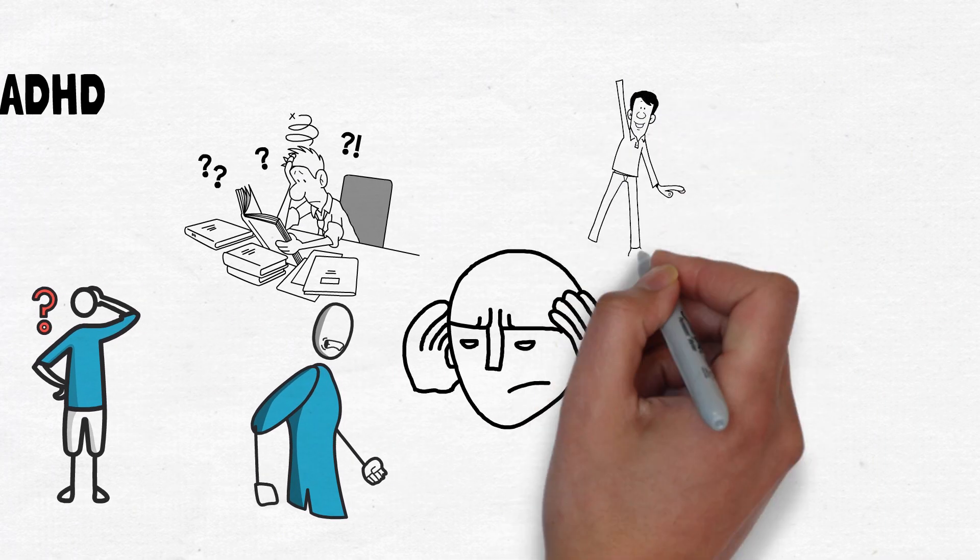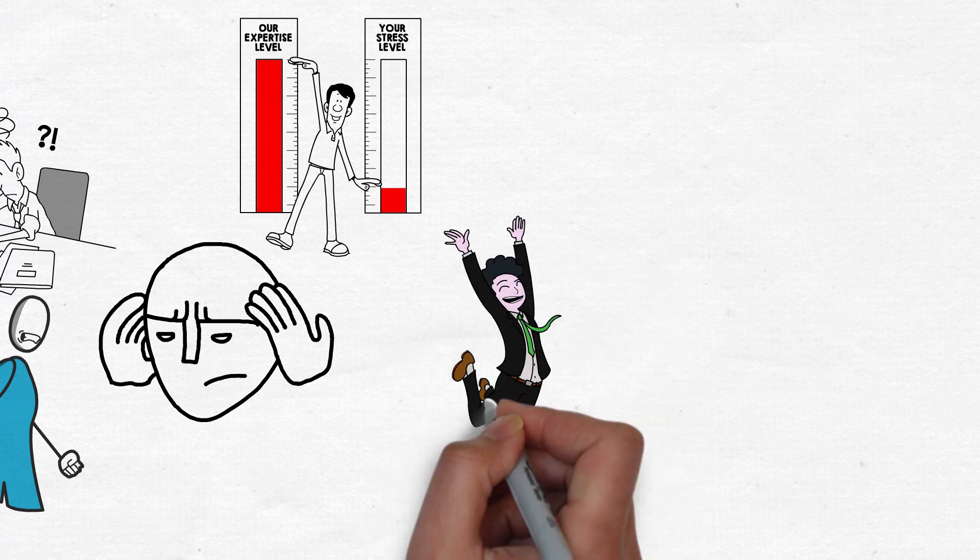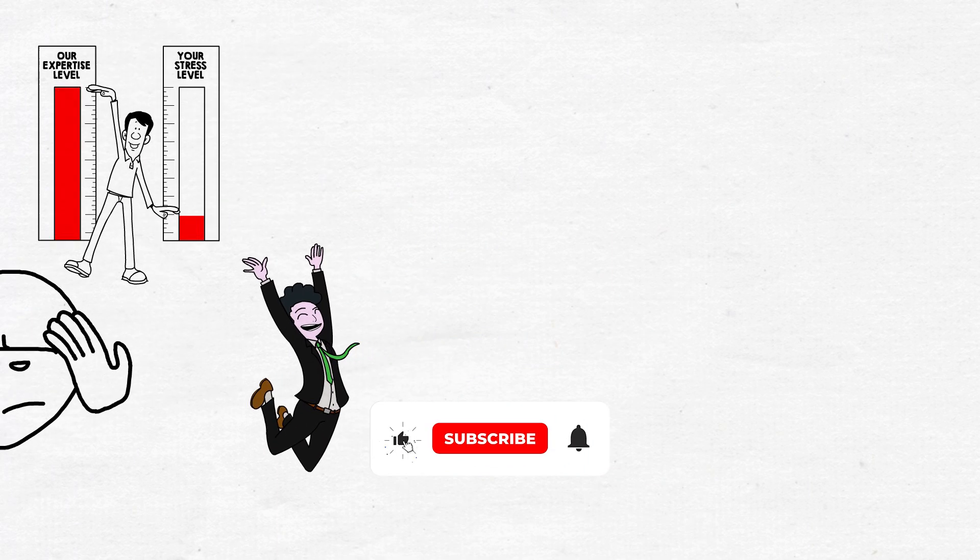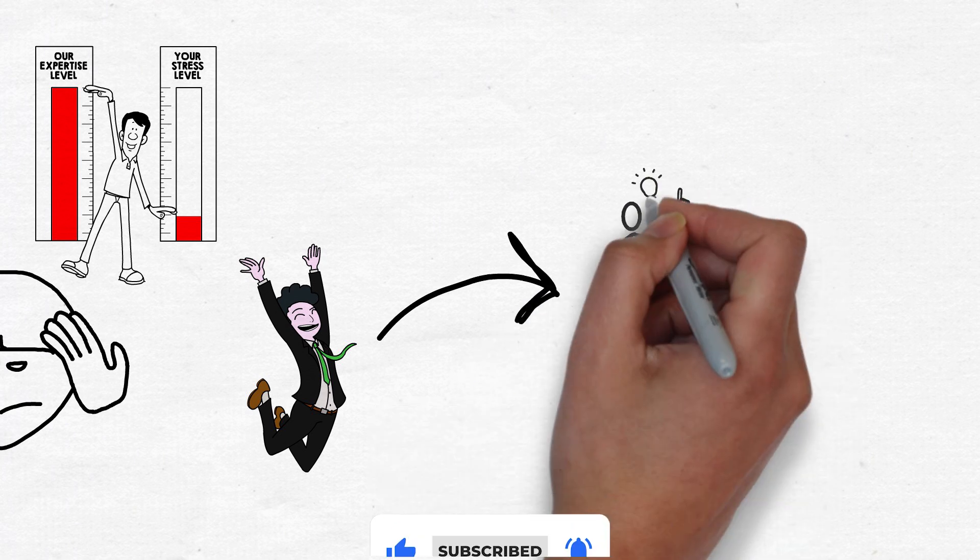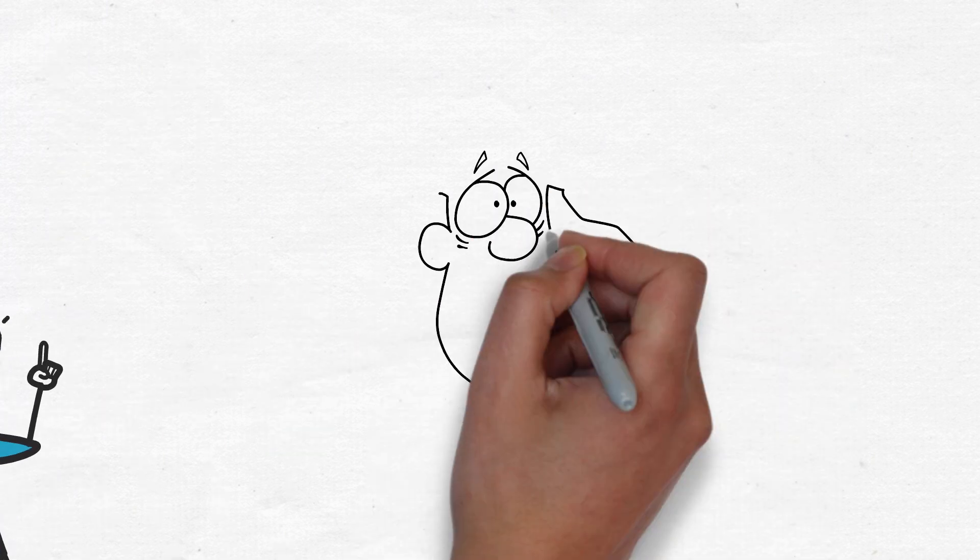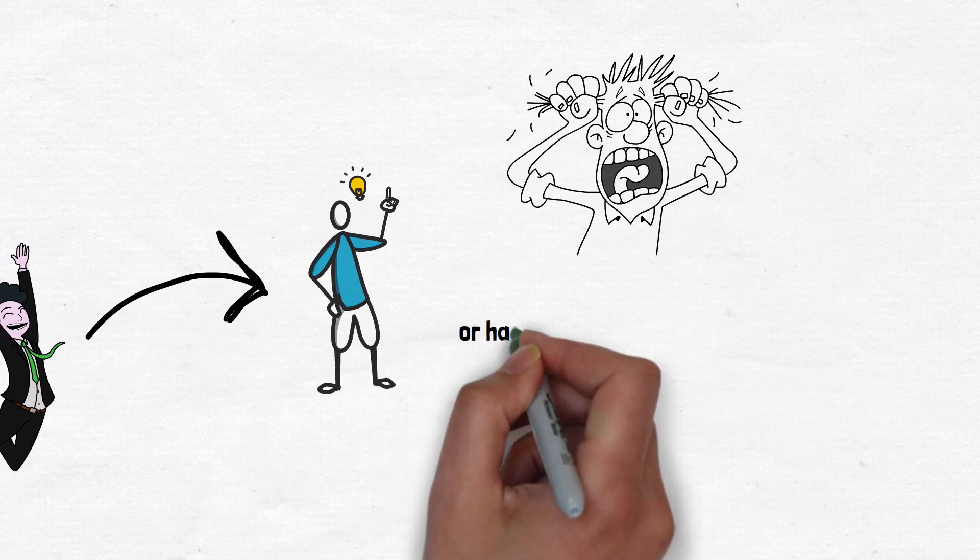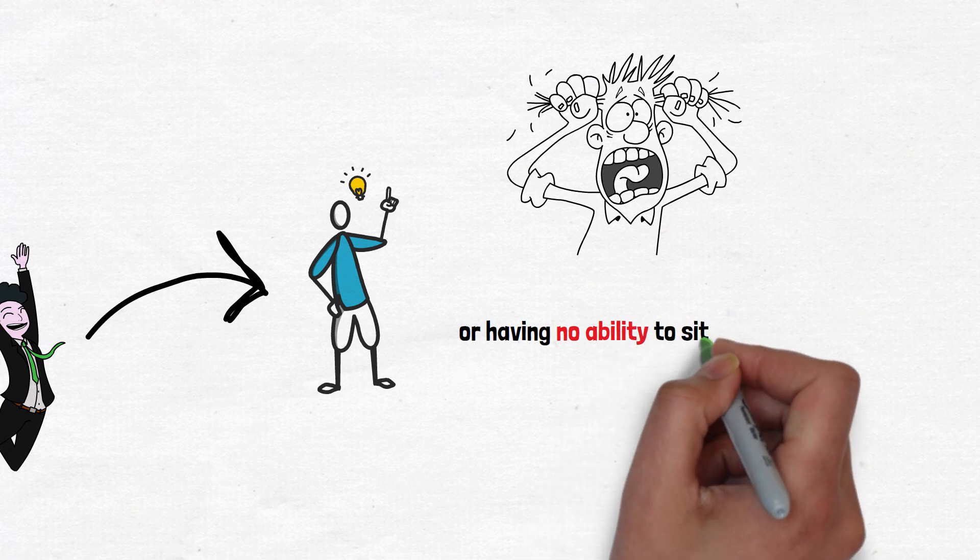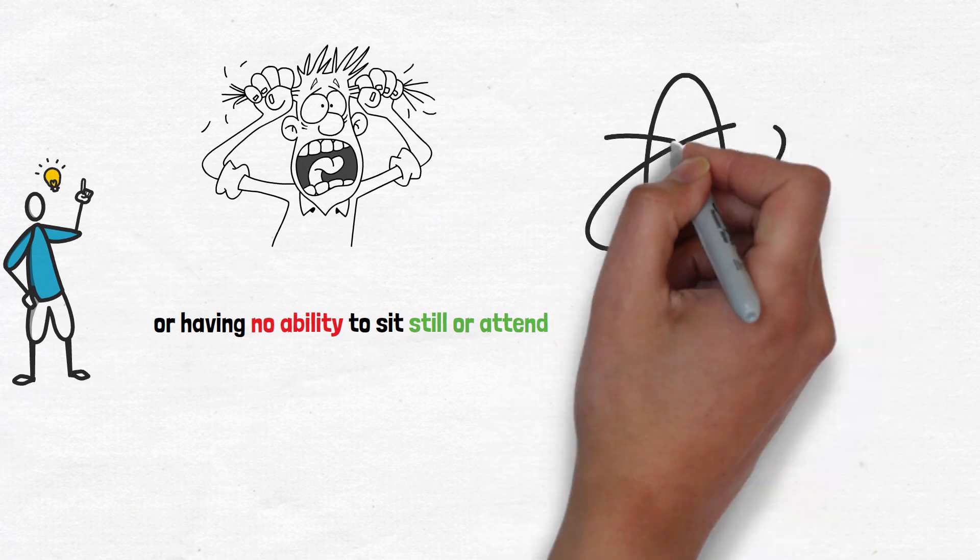Now this is a very important point because typically we think of somebody with ADHD as being really wild and hyperactive or having no ability whatsoever to sit still and attend. And while that phenotype, as we call it, that contour of behavior and cognition can exist, many people if not all people with ADHD...